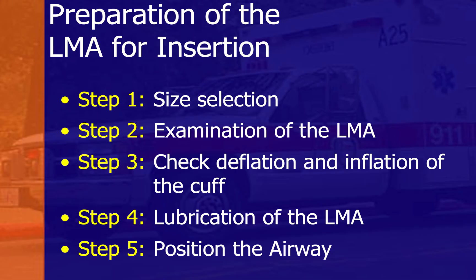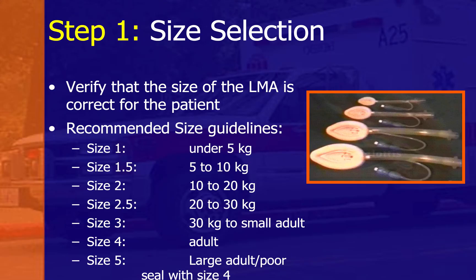Preparation for LMA insertion involves: examining the LMA, checking deflation and inflation before insertion, lubricating with water-soluble lubricant, and positioning the patient's airway. Proper size selection is important: size 1 is for patients under 5 kg.